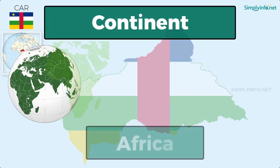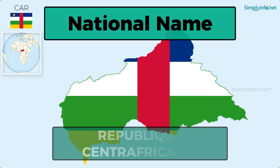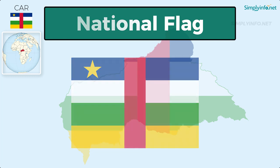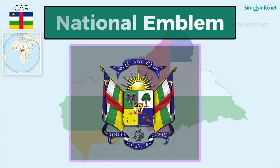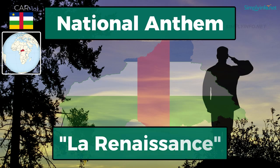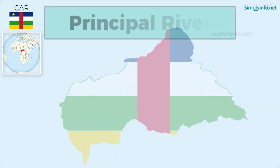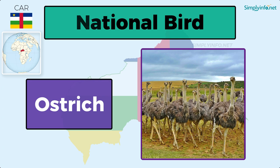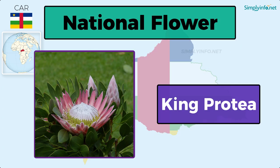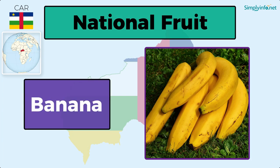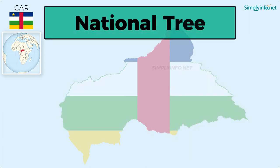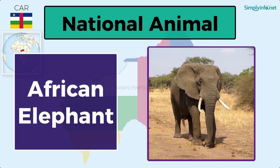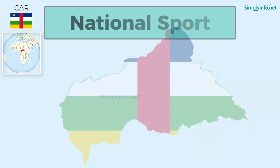Continent: Africa. National name: République Centrafricaine. National flag, national emblem, national anthem: La Renaissance. Principal river: Ubangi. National bird: ostrich. National flower: king protea. National fruit: banana. National tree: baobab tree. National animal: African elephant. National sport: football.